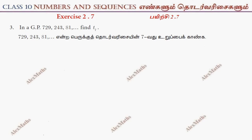Hi students, this is Alex here. This is exercise 2.7, question number 3. In a GP, the terms are 729, 243, 81, dot dot dot. Find T7.